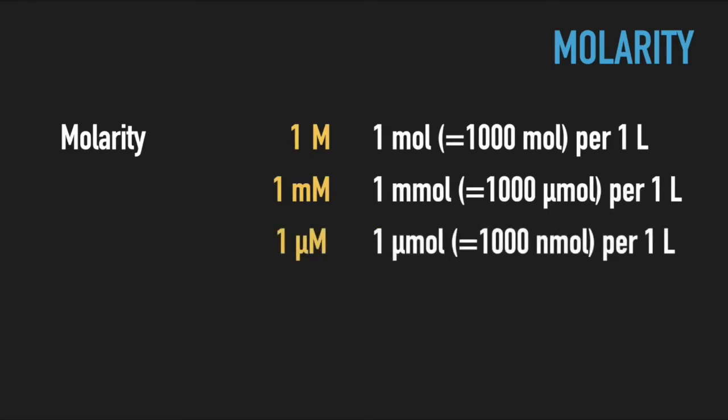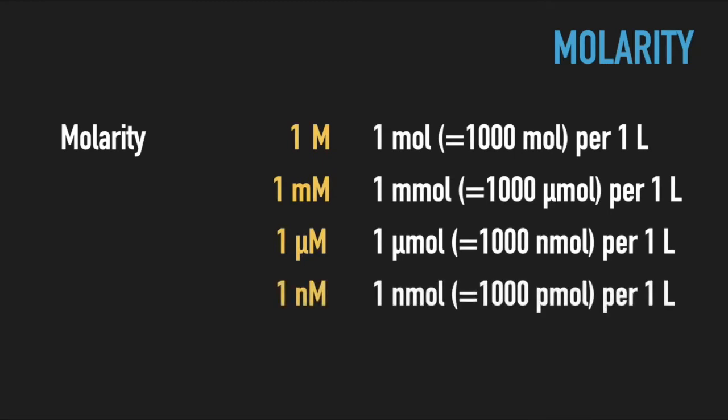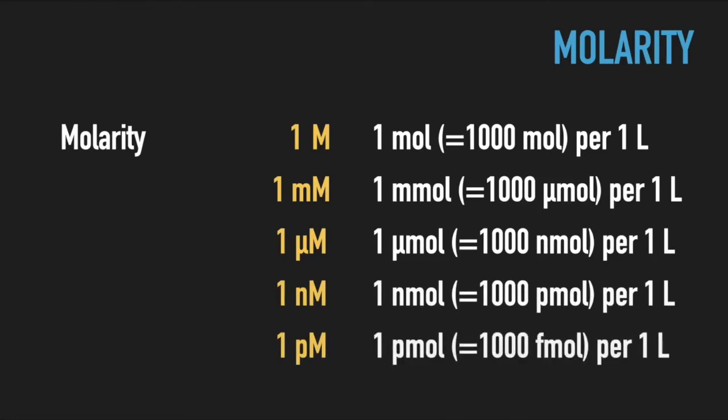You should remember the following prefixes and their decimal quotients, as they are often used in the lab. Milli is one thousandth part of a whole. Micro is one millionth. Nano is three orders of magnitude less than micro. There is also pico and femto. They all differ by a factor of one thousand.